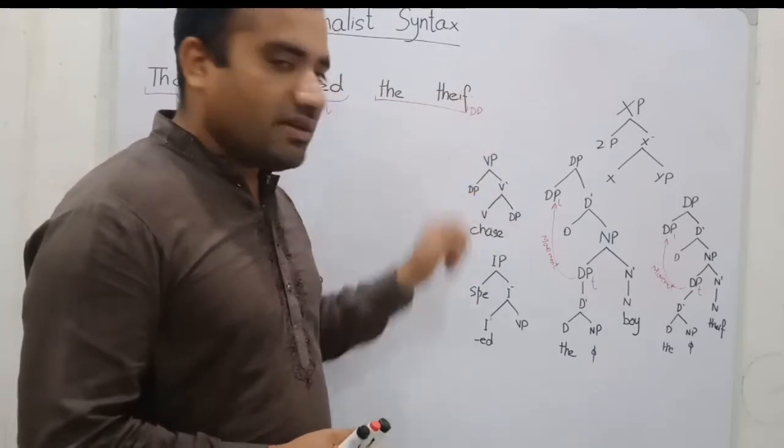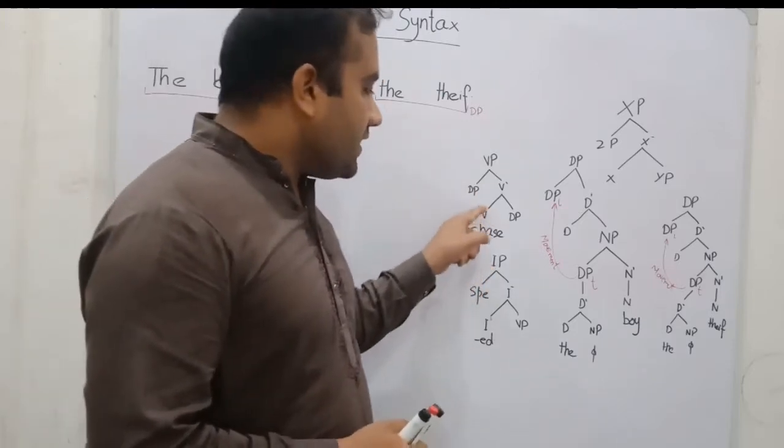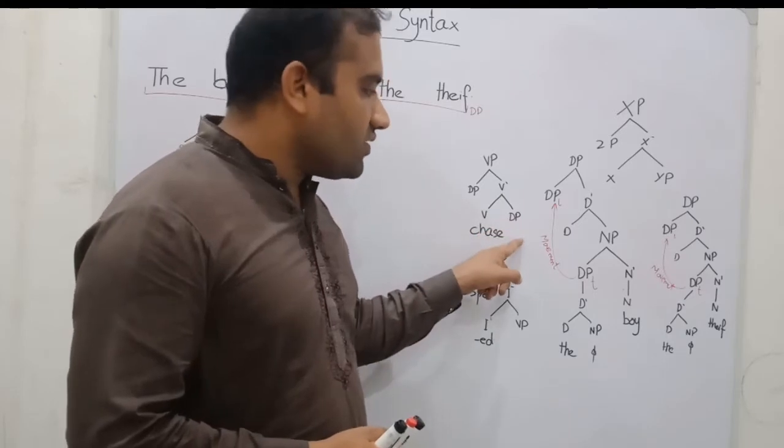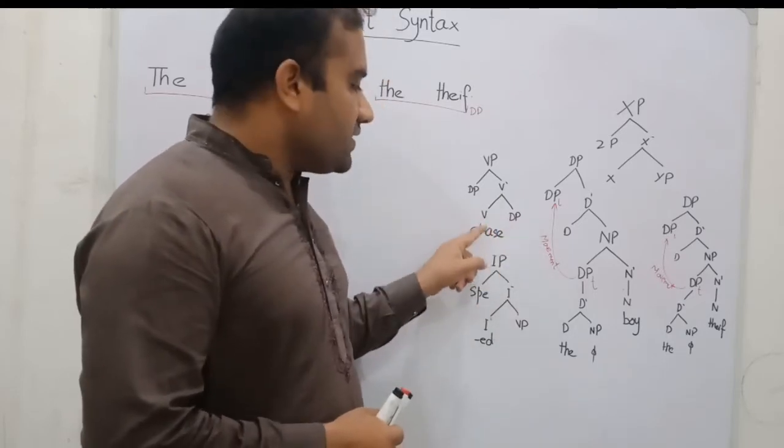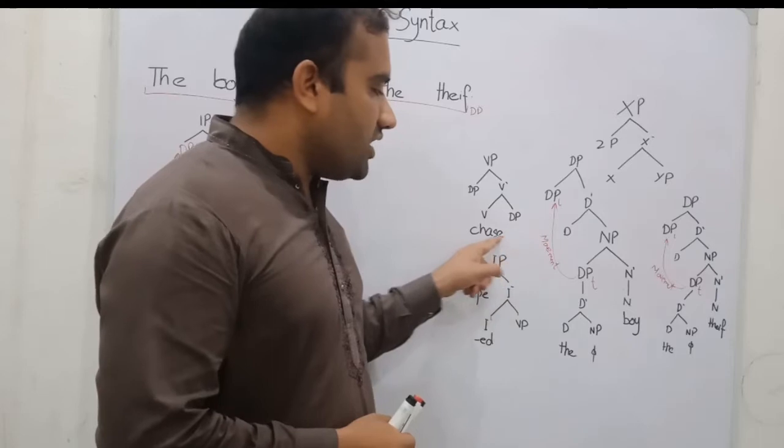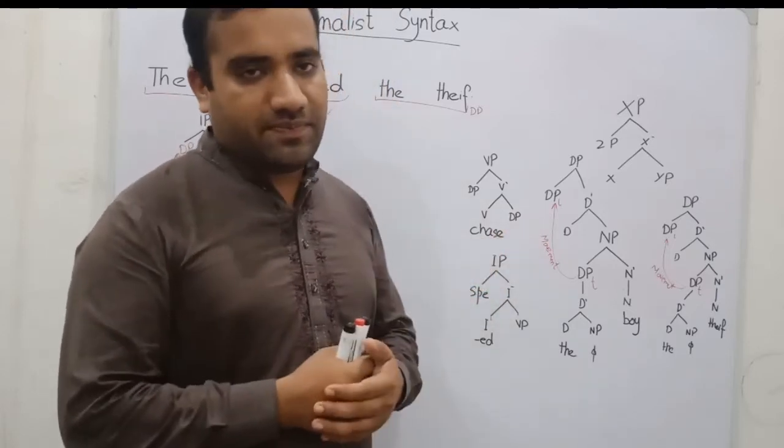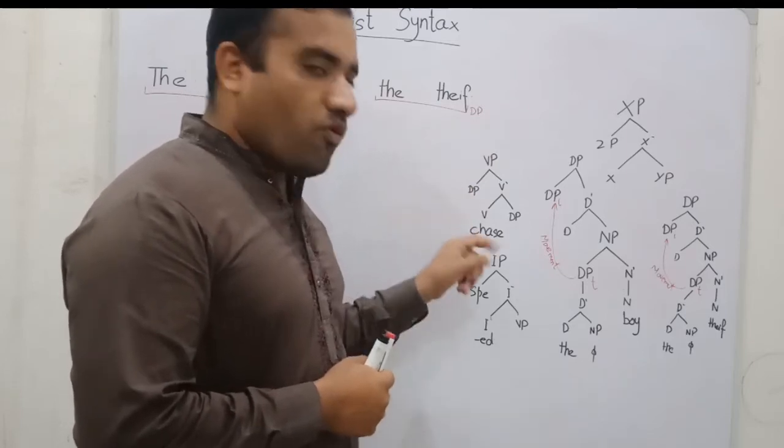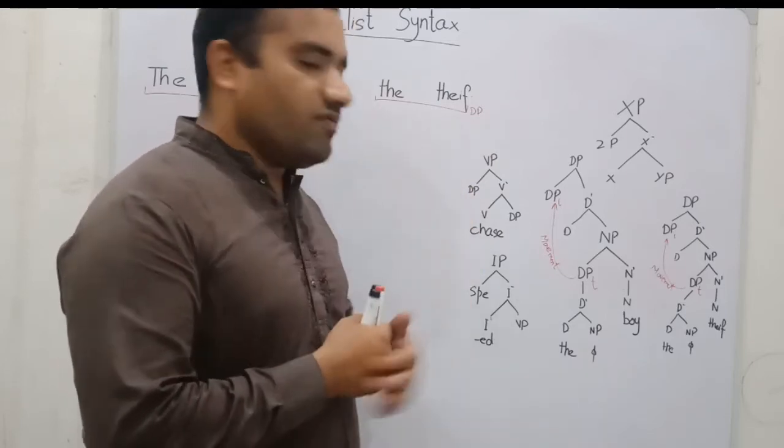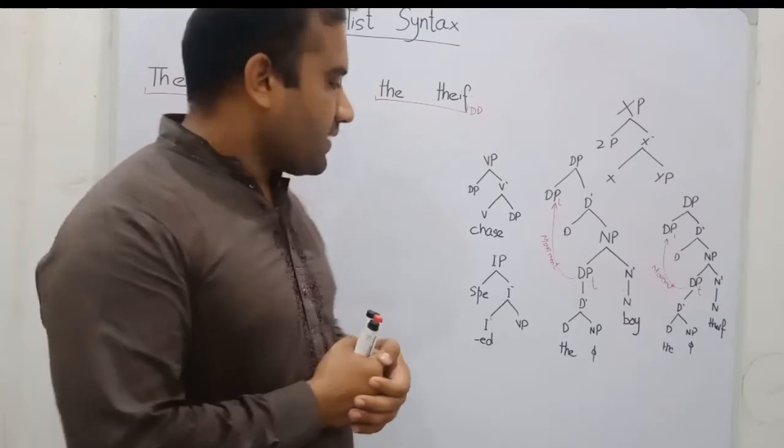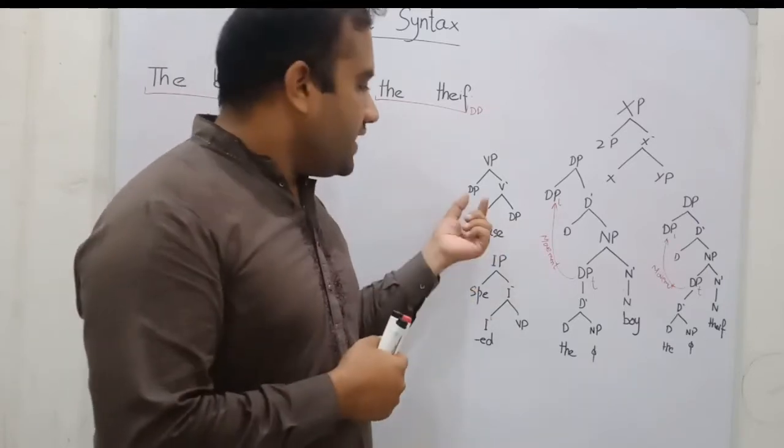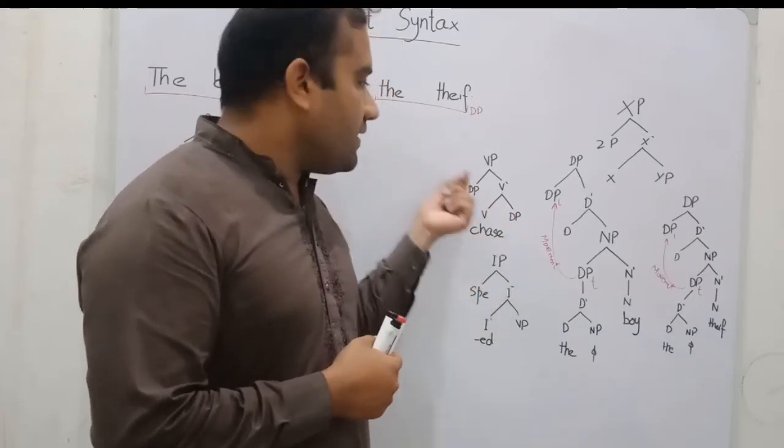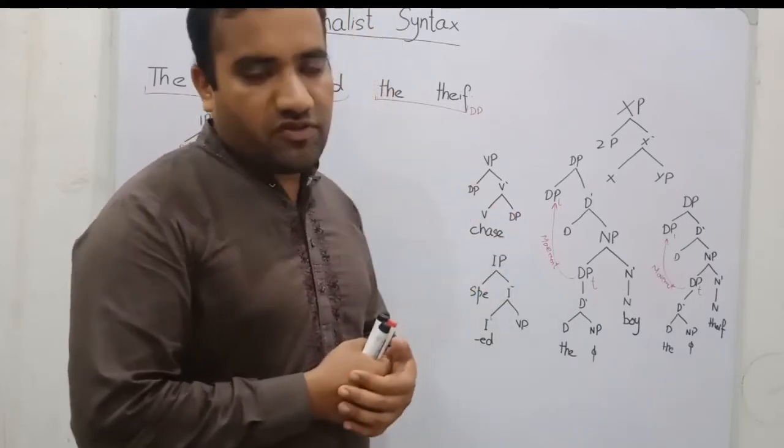The complement is the thief, because chase and the thief is linked through the thematic relation. And the DP, the boy, is linked with the case position. And we have this structure. V takes DP the complement, and V takes DP the specifier position.